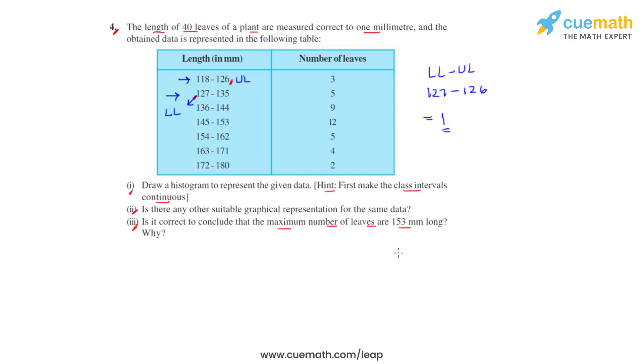We then add half of this difference to each of the upper limits and subtract the same from each of the lower limits. So half of 1 is 0.5, that means 0.5 is added to each of the upper limits and is subtracted from each of the lower limits.